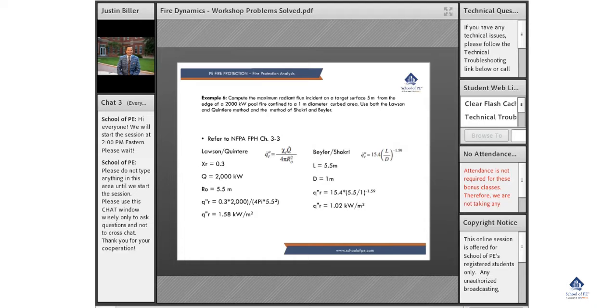Example number six asks the question: compute maximum radiant flux on a target surface five meters from the edge of a pool fire. So a 2,000 kilowatt pool fire, or a 2 megawatt fire.